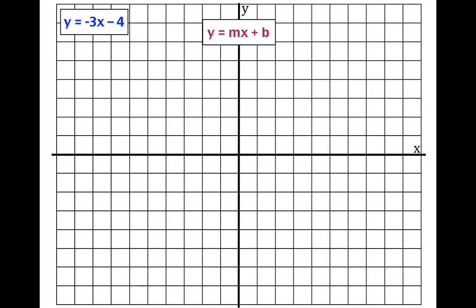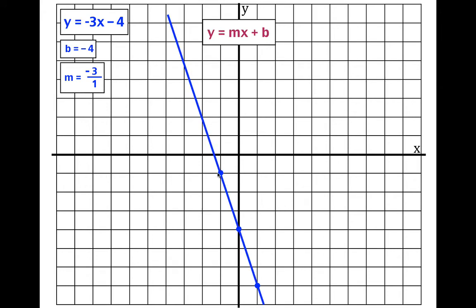The next one is y equals minus three x minus four. The y-intercept is minus four. The slope is not a fraction, but I want rise over run, so I write it as minus three over one. Minus three over one is the same as minus three, but now I have rise and run. Put a point at minus four, go down three and over one to the right for the second point. You could also go up three and to the left one. All three points fall on the same line: y equals minus three x minus four.